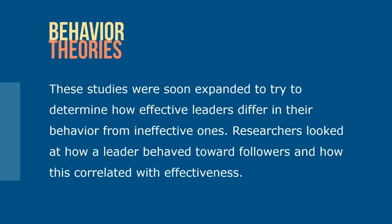The failure to identify a universal set of leadership traits led researchers in the early 1950s to begin looking at what a leader does rather than who he or she is. One line of research focused on what leaders actually do on the job, such as various management activities, roles, and responsibilities. These studies were soon expanded to try to determine how effective leaders differ in their behavior from ineffective ones, and how a leader's behavior towards followers correlated with leadership effectiveness or ineffectiveness.